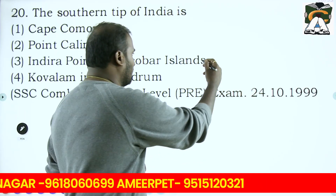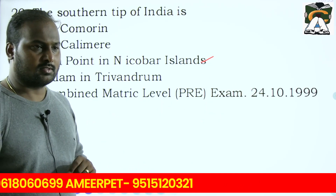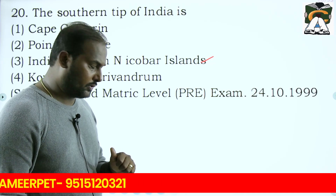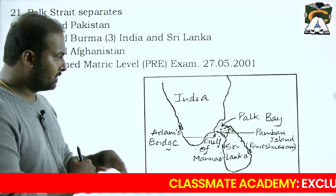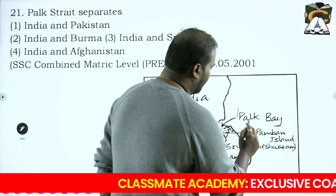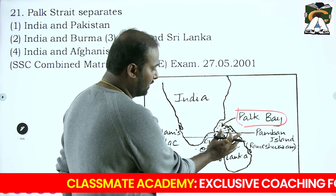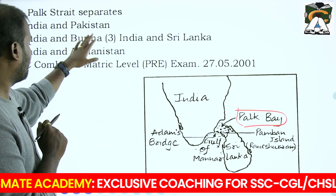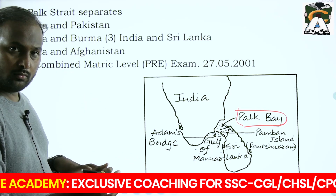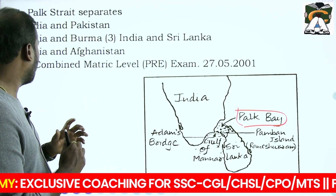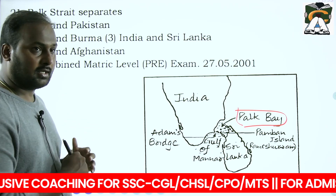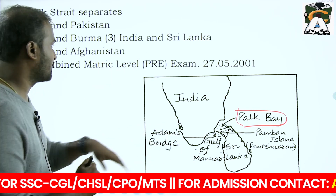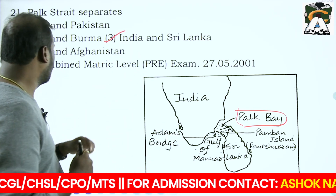The southern tip of India is Indira Point in the Nicobar Islands at around 6 degrees 4 minutes latitude. The Palk Strait separates India and Sri Lanka. India and Pakistan have the Radcliffe Line, India and Burma have a different boundary, and India and Afghanistan have the Durand Line.